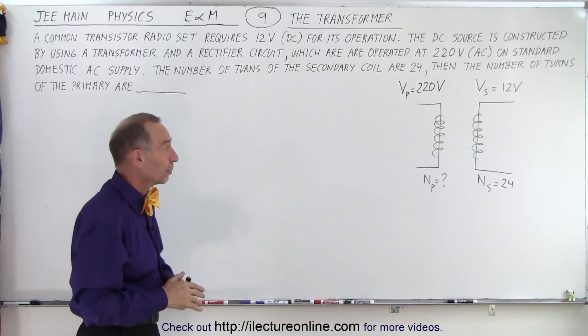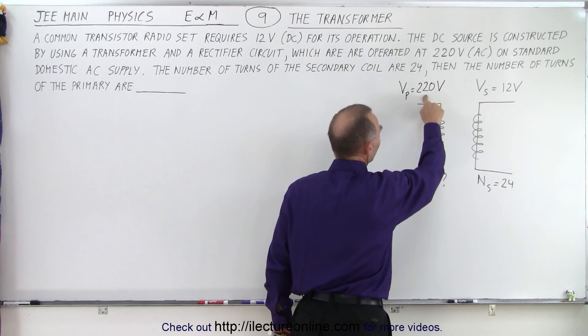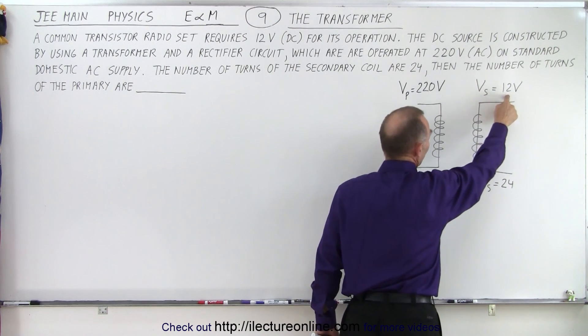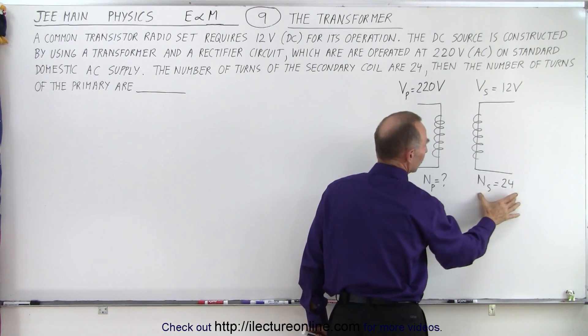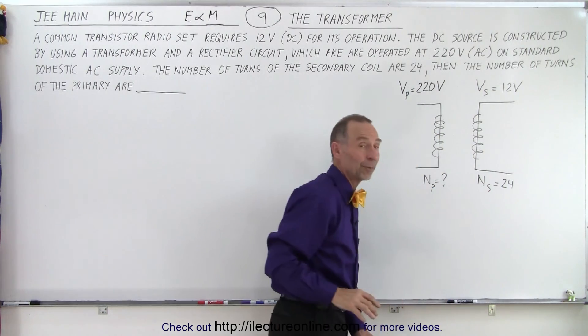We're using a transformer where we have an input voltage or a primary voltage of 220 volts, an output voltage or secondary voltage of 12 volts. They tell us the number of turns of the secondary and they're asking for the number of turns of the primary.